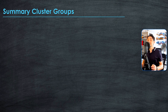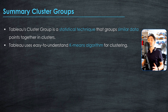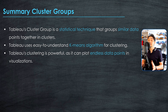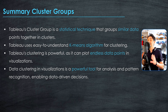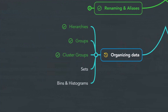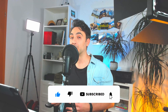To summarize: cluster groups in Tableau are a statistical technique to group similar data points together. The algorithm used is k-means — easy to implement and understand. Clustering in Tableau is a powerful feature, notably because Tableau can plot an unlimited number of data points, unlike tools like Power BI which limit the number of visible data points — making clustering difficult in those tools. Data clustering in visualization is a powerful tool for analysis and pattern recognition, helping organizations make data-driven decisions. Next, we'll learn how to split dimension values into two subsets using Tableau Sets.